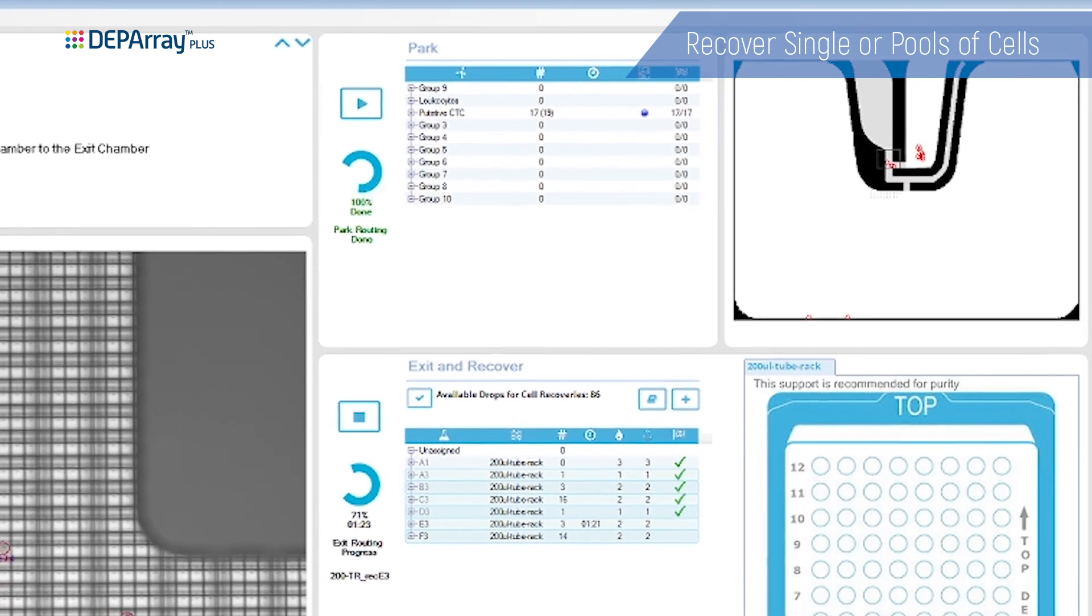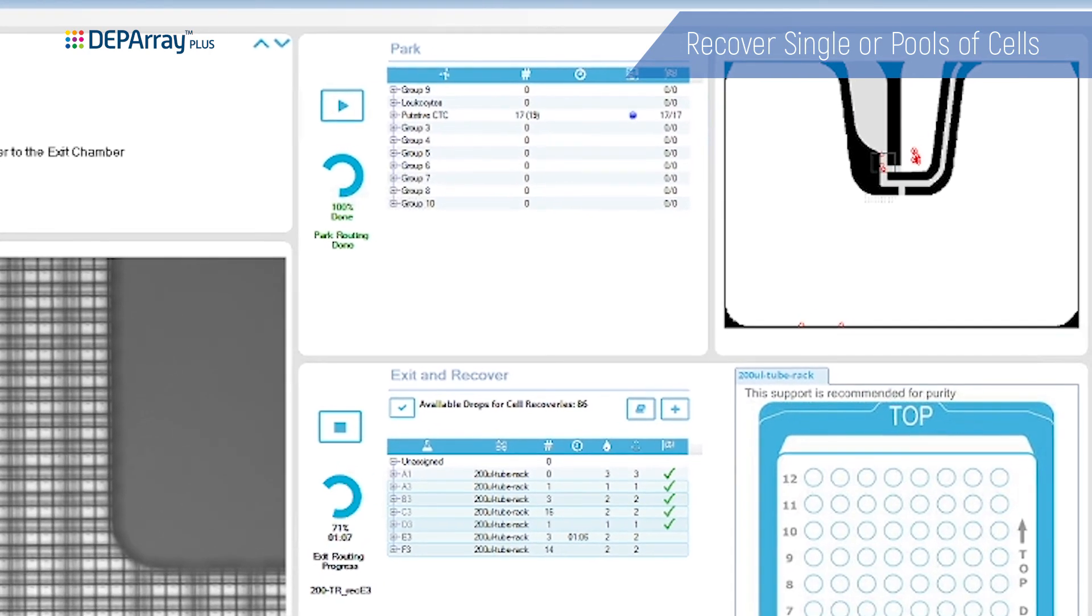As a result of this high precision digital process, you can finally isolate the most rare and unique cells from your sample suitable for even the most challenging single-cell downstream applications.